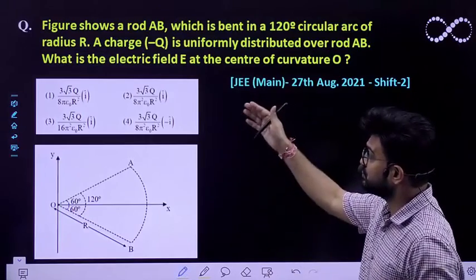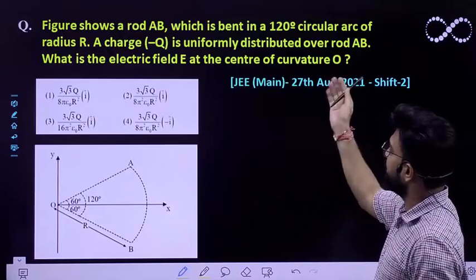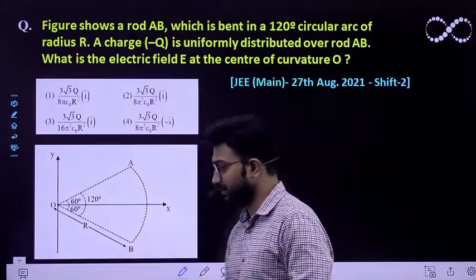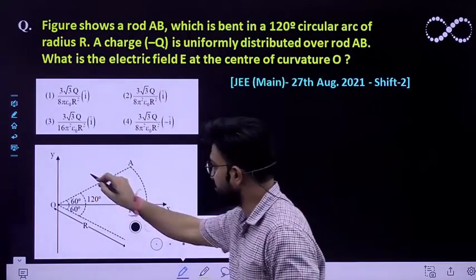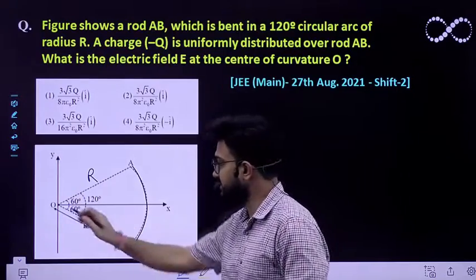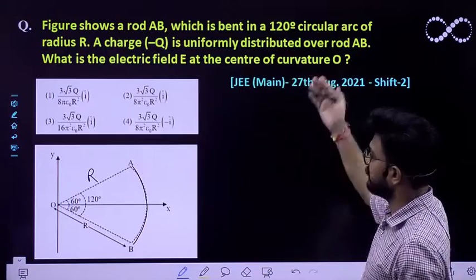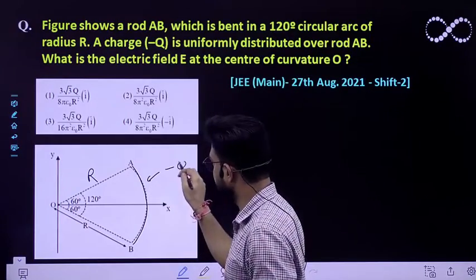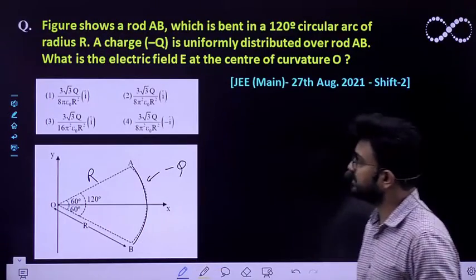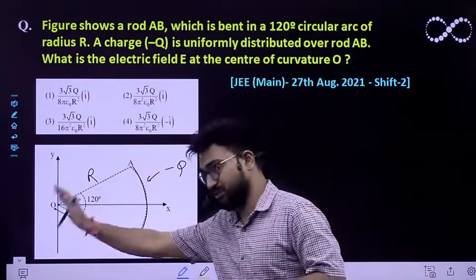Question says a figure shows a rod AB. This rod is bent in the form of a 120 degree circular arc of radius capital R. This is an arc which sustains an angle of 120 degrees at the center. A charge of minus Q is uniformly distributed over the rod AB. What is the electric field E at the center of curvature O that you need to find out?